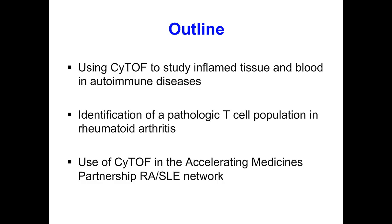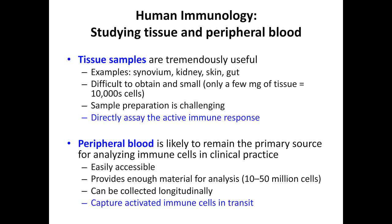It's my pleasure to talk with you about our work using mass cytometry to find pathologic T-cells in rheumatoid arthritis. I've structured the talk in three parts. In the first part, I'll describe our overall approach to using CyTOF to study inflamed tissues and blood in autoimmune diseases. In the second part, I'll tell you about a particular example we've published recently, identifying a unique population of T-cells in rheumatoid arthritis samples. And lastly, I'll mention the use of CyTOF in the Accelerating Medicines Partnership consortium that studies rheumatoid arthritis and lupus.